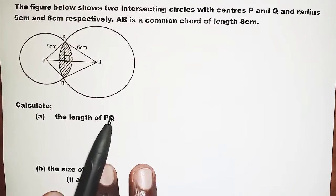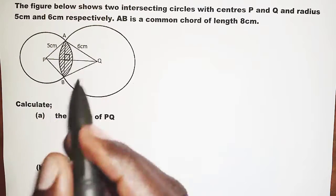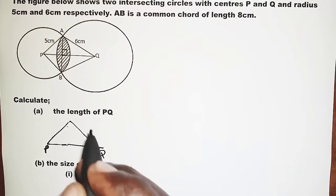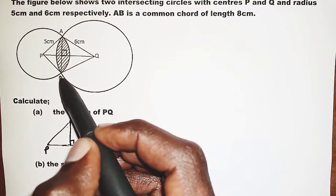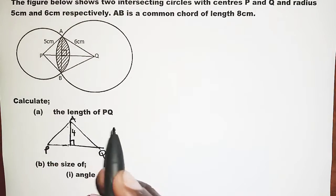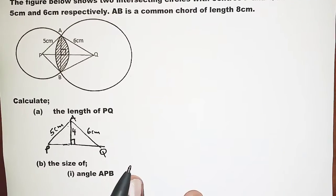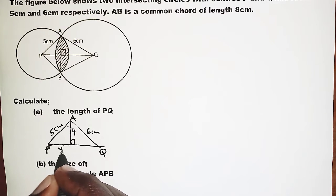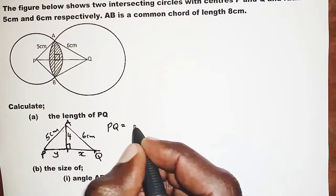To begin with part A, finding the length PQ. We extract triangle PAQ. Here is P, here is Q, and here is A. We were told that chord AB is 8 centimeters, and from A up to the midpoint is half of AB, so that is 4 centimeters. AQ is 6 centimeters and PA is 5 centimeters. We divide PQ into two parts: from P to the midpoint call it y, and from the midpoint to Q call it x, so PQ equals x plus y.